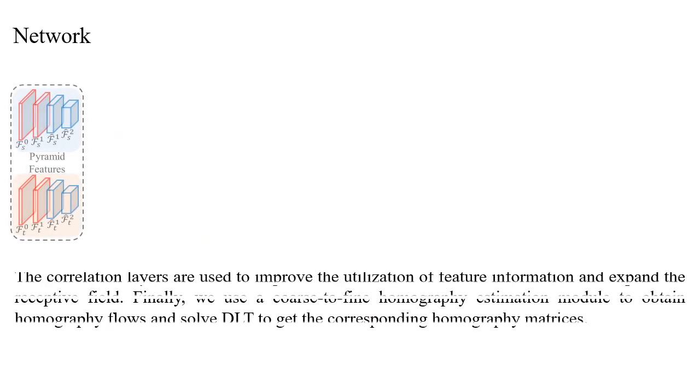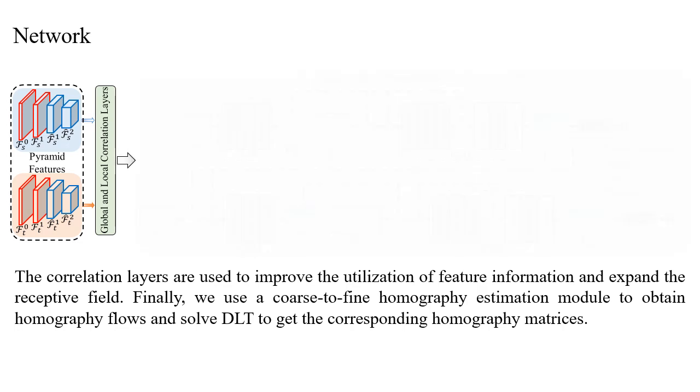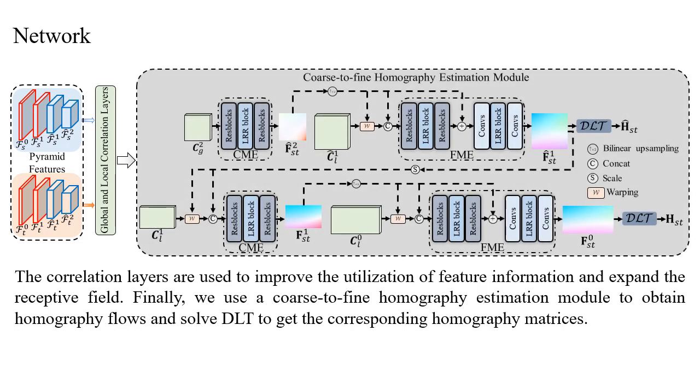After that, the global and local correlation layers take the pyramid features as inputs to calculate the correlation maps, to improve the utilization of feature information and expand the receptive field. Then, the calculated correlation maps are fed into the coarse-to-fine homography estimation module to obtain homography flows and solve DLT to get the corresponding homography matrices.